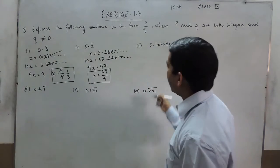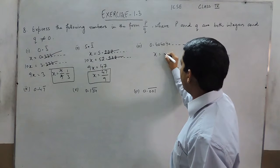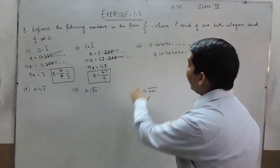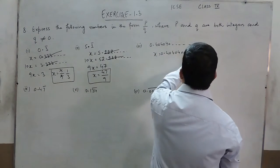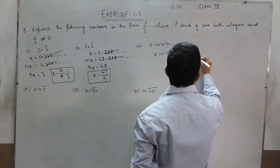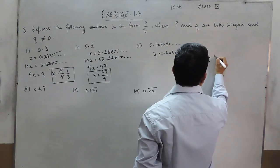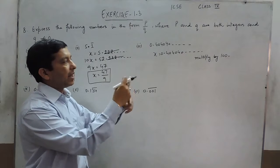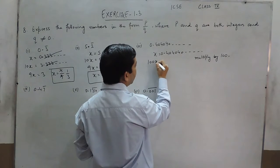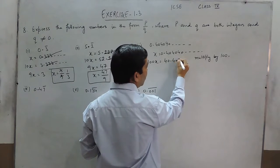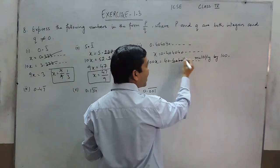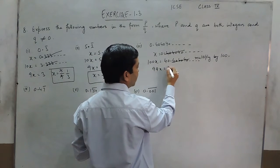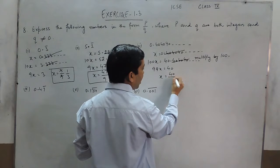Here there are two digits which are repeating. Taking x as 0.404040 and so on, in this case we have to multiply by 100. So it comes out to be 100x is equal to 40.404040 and so on. The repeating part cancels with this. So if we subtract, 99x becomes 40 and the value of x becomes 40 upon 99.